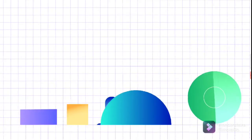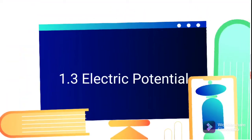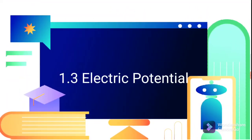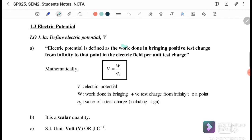Welcome back to my channel. Today we will continue discussing 1.3 electric potential. Electric potential is defined as the work done in bringing a positive test charge from infinity to that point in the electric field per unit test charge. We can write the equation as V equals work done per positive test charge.